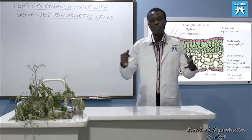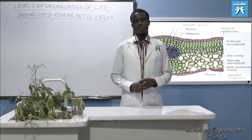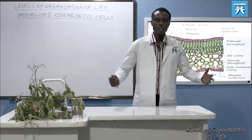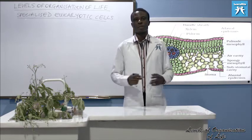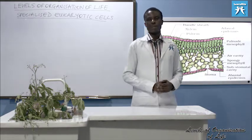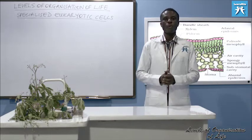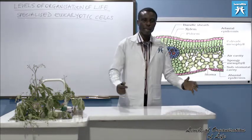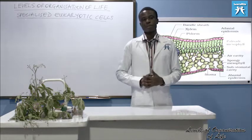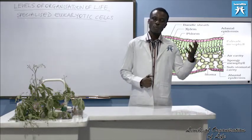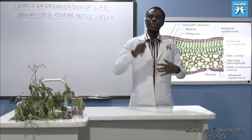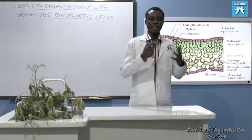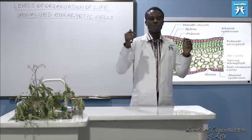Let's look at specialized eukaryotic cells in plants. In plants, cells are specialized to perform various functions, including photosynthesis. Plants are noted for the production of food — in the ecosystem they are referred to as producers. So we want to look at specialized cells that enable plants to be qualified in this manner: the photosynthetic cell.